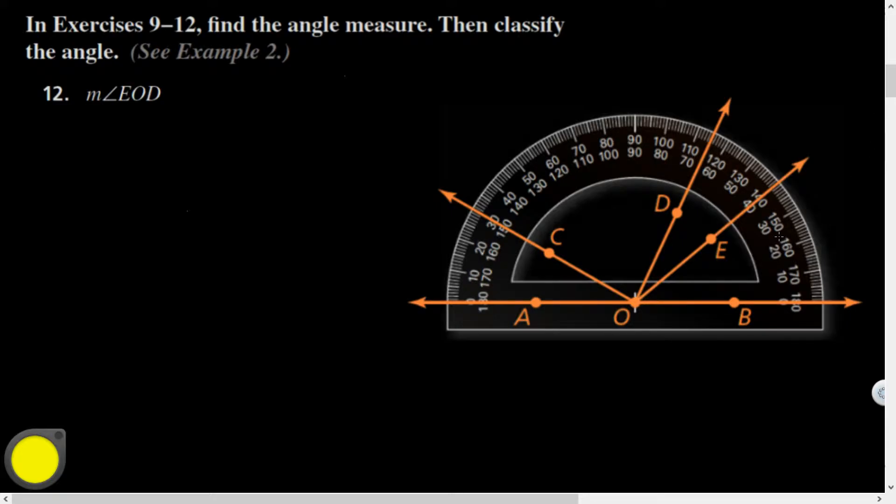Question 12 says find the measure of angle EOD, so this is going to equal some number. Vertex at O, that's convenient. Notice that my protractor is not zeroed up with one of those rays that form the angle. But I can use the degree measure as coordinates of a point and use the angle measurement postulate to subtract those and take the absolute value to find the difference.